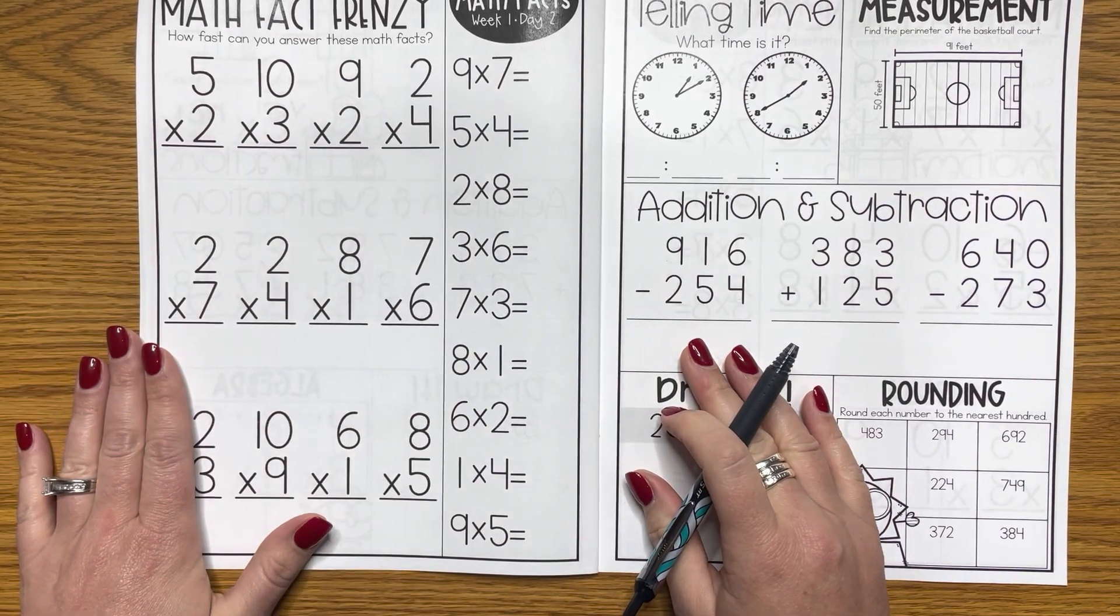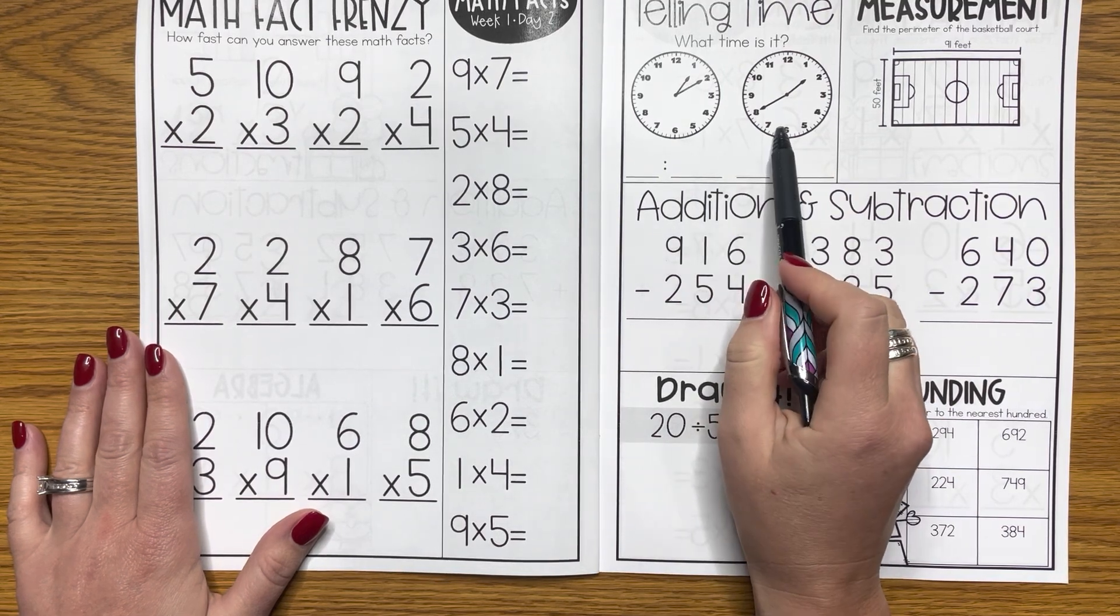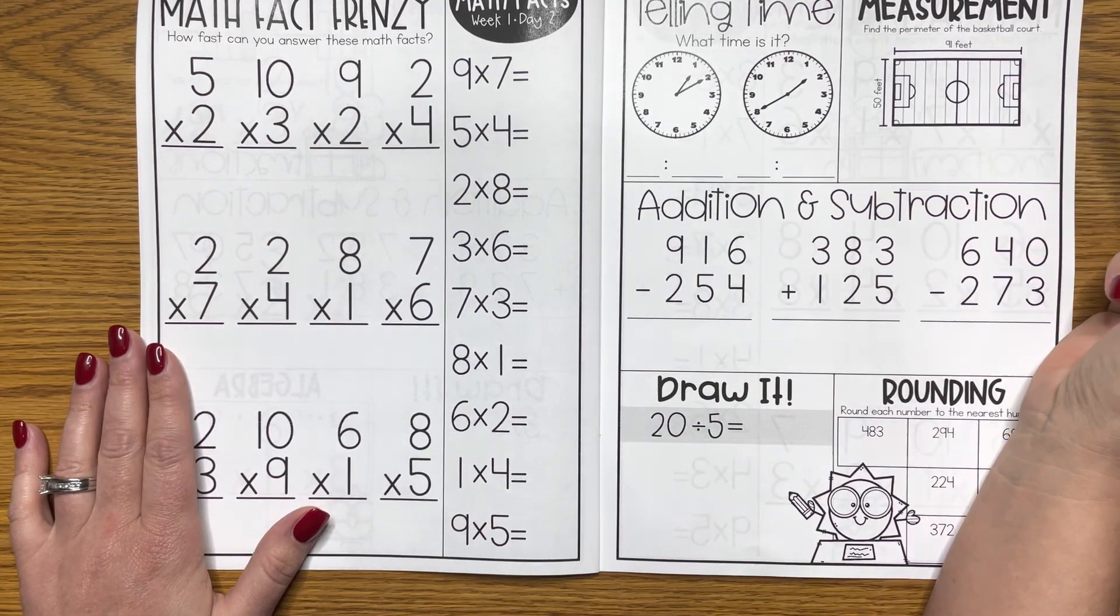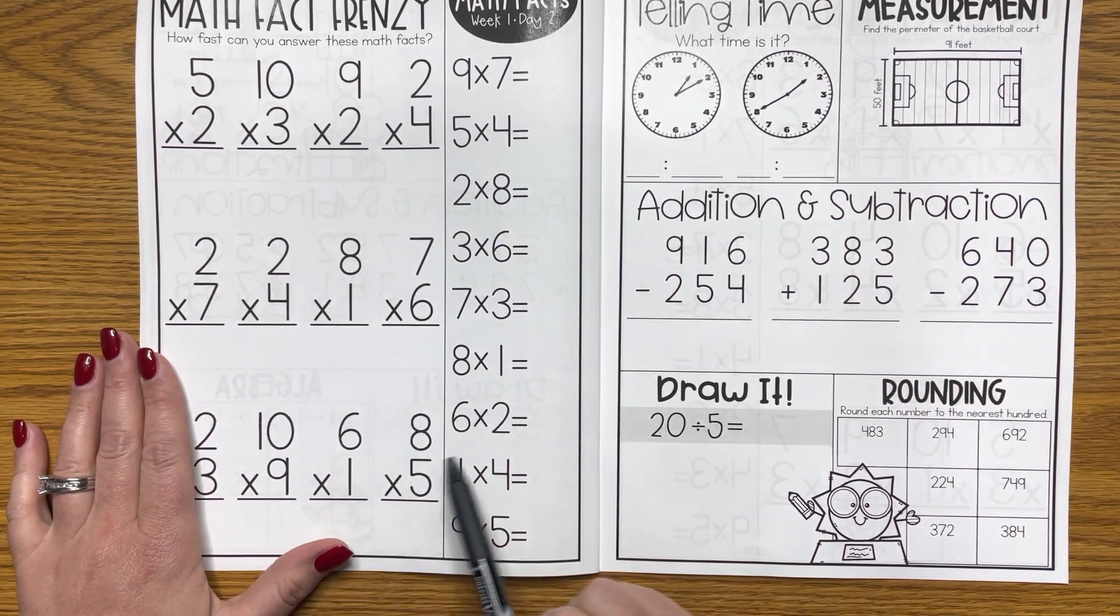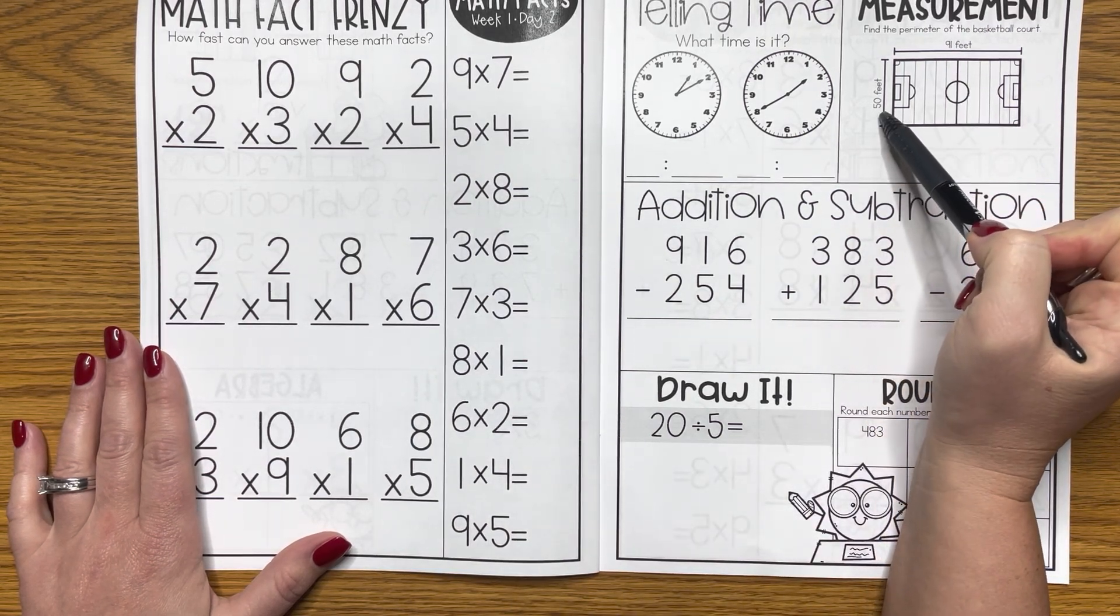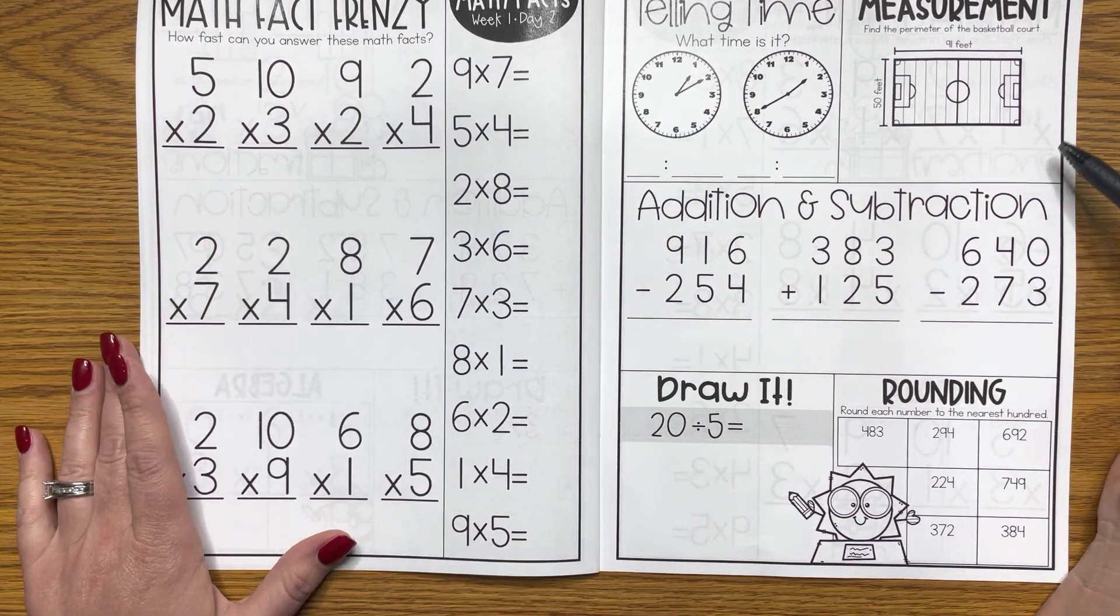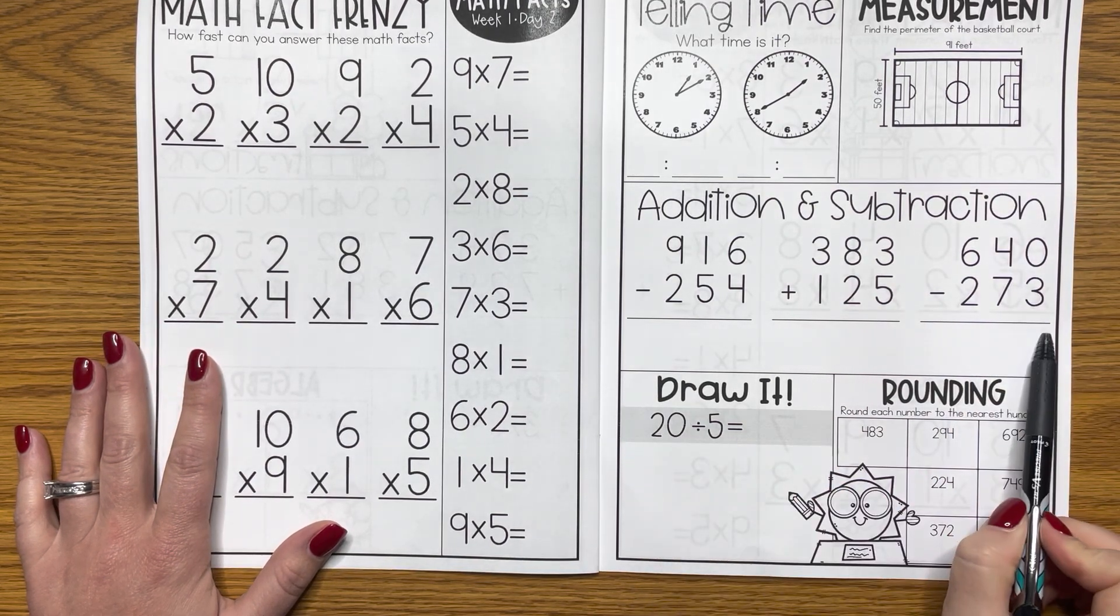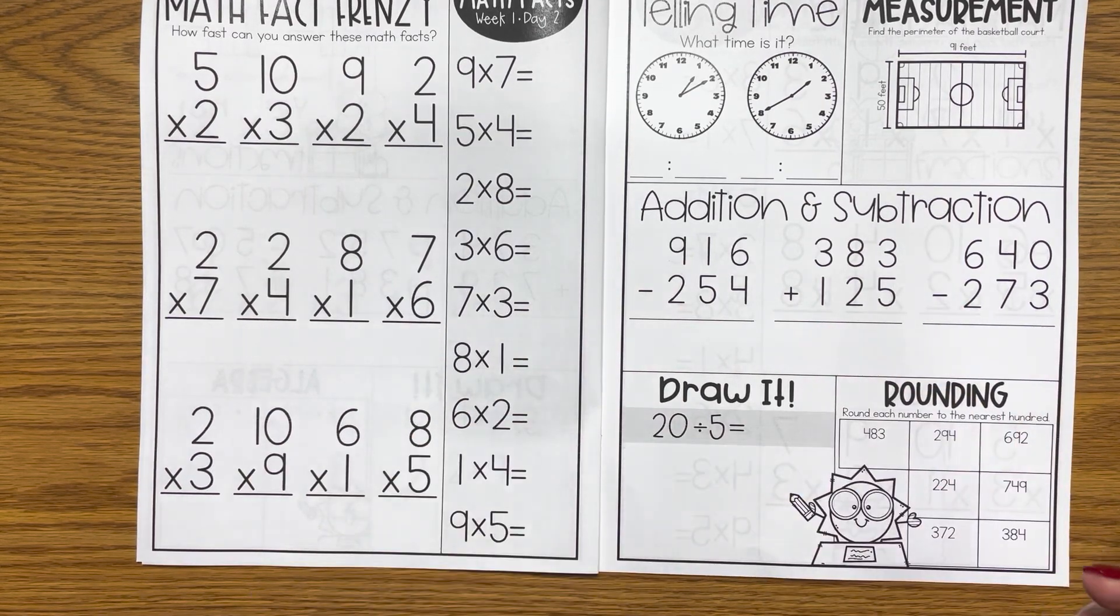On day two, just like before, they'll start with their math fact frenzy and then they'll come over and have a new set of skills. We work on telling time and finding the perimeter. You could change this to area or have them find both, but at this point, if my kids are working on math facts, they're probably not ready for 91 times 50, but they can do perimeter. Again, we have addition and subtraction. This time we have two subtraction, one addition, so it's the opposite of the previous day.